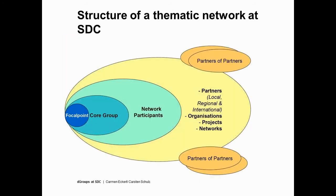With the next slide you can see more or less how such a thematic network is composed. You have a focal point supported by a core group. Then you have the inner circle of network participants — they may be SDC development cooperation collaborators or implementing partner collaborators. And then you have the outer networks with local, regional and international structures, organizations, projects and other networks. This is more or less the architecture of what we at SDC mean by a thematic network.